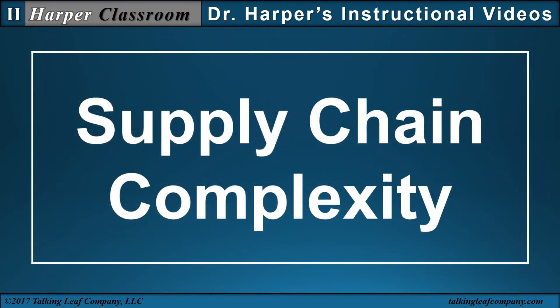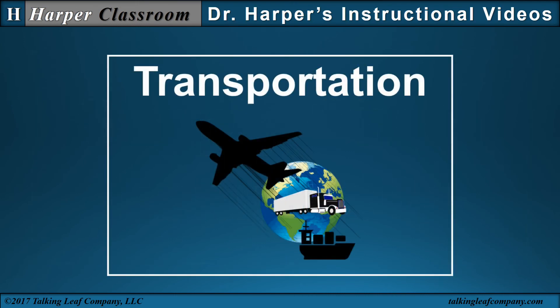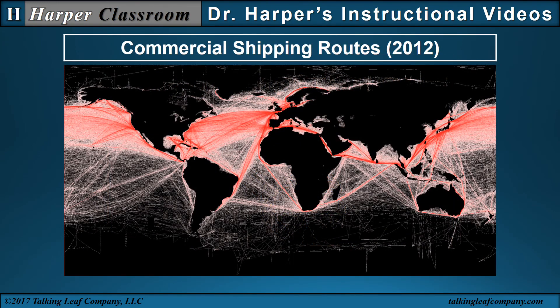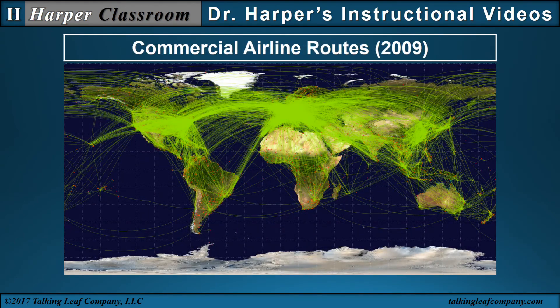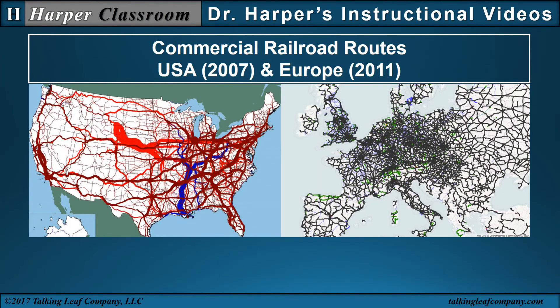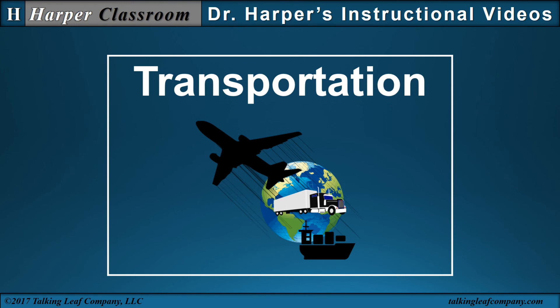Next is supply chain complexity. The complexity in management of supply chains can be well illustrated by considering transportation. There are many modes of transportation: air, truck, water. For example, these commercial shipping routes just in the year 2012 required scheduling, monitoring, executing, and so on. The same for air and the commercial airline routes in the year 2009. For rail, the routes for the United States in 2007 and Europe in 2011 present a similar challenge. These examples illustrate the challenge in managing just the transportation portion within the supply chain.